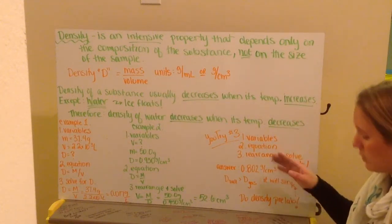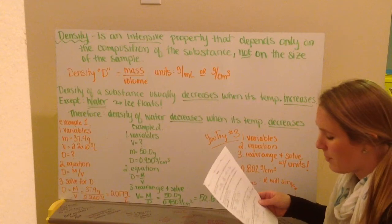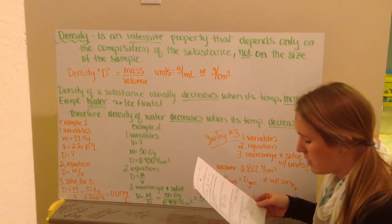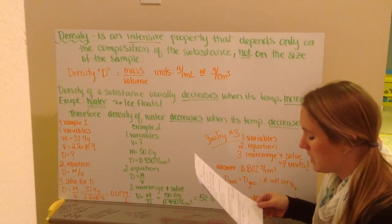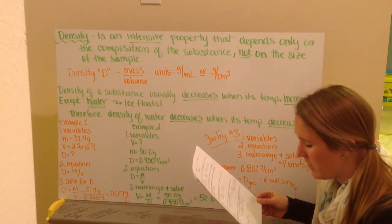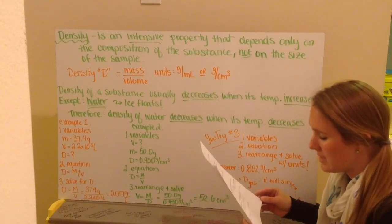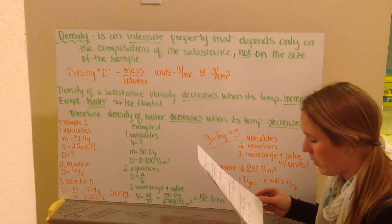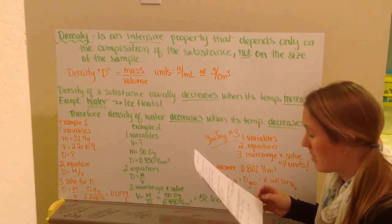So now go ahead and try number three. You have a plastic ball with a volume of 19.7 centimeters cubed with a mass of 15.8 grams. Would this ball sink or float in a container of gasoline given that the gasoline's density is 0.66 to 0.69 grams per centimeter cubed?